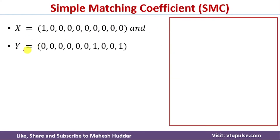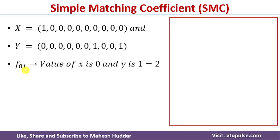X and Y are defined here. To calculate the Simple Matching Coefficient (SMC), we need to calculate the value of F01, where 0 represents the value from X and 1 represents the value from Y. So we are expecting 0 in X and 1 in Y — if we have that combination we count it. We have two such combinations, so F01 equals 2.